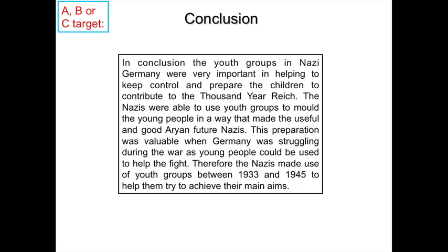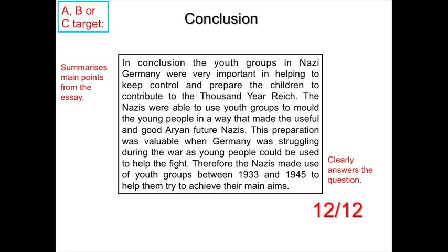The conclusion reads: the youth groups in Nazi Germany were very important in helping to keep control and prepare the children to contribute to the thousand-year Reich. The Nazis were able to use youth groups to mould young people in a way that made them useful and good Aryan future Nazis. This preparation was valuable when Germany was struggling during the war, as young people could be used to help the fight. Therefore, the Nazis made use of youth groups between 1933 and 1945 to help them achieve their main aims. This candidate has summarised their main points and clearly answered the question — an answer like this will get you 12 out of 12 marks. Have a look at your own answer — have you given three PEA paragraphs, tried to link them together, and clearly answered the question in your conclusion? If not, highlight what you need to do to achieve your target grade.